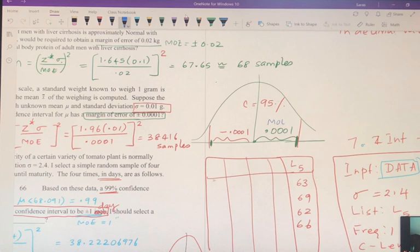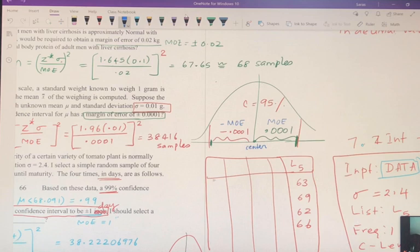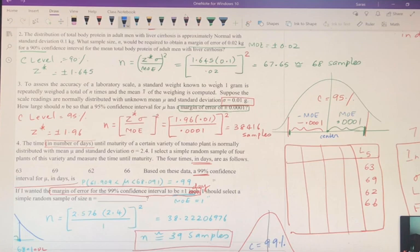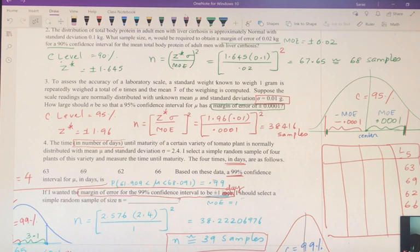This is the negative margin of error, this is the positive margin of error. On either side from the center, the margin of error is going to be 0.0001. When margin of error is such a minuscule number, you need to go for a very big sample size. Remember, when the n is big, your margin of error is going to be a smaller number.